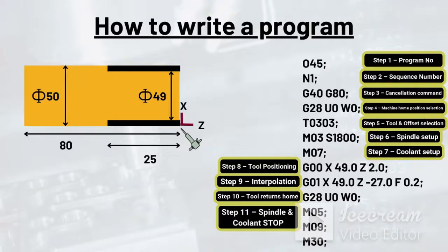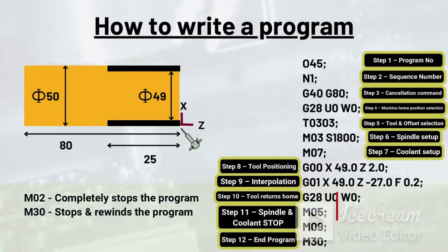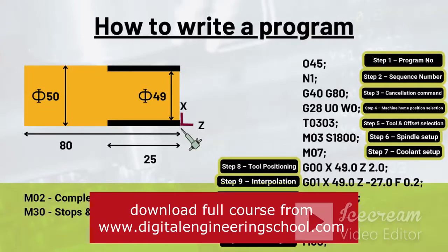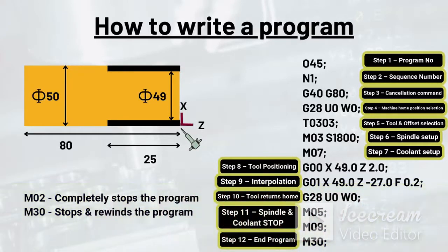Now to end the program, we have two choices: M02 and M30 command. M02 completely stops the program whereas M30 stops and rewinds the program. So it's recommended to use M30 always unless otherwise.